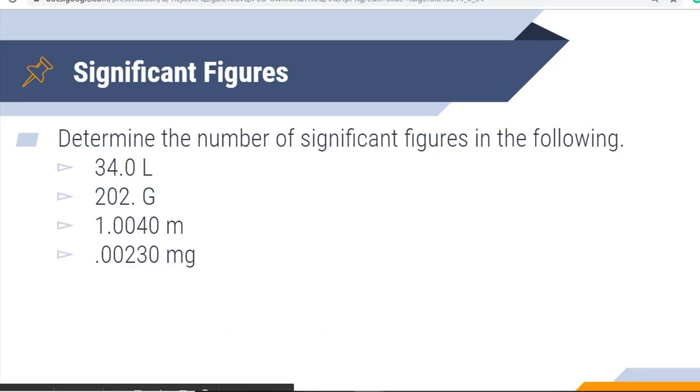Let's get some practice and determine the number of significant figures in the following. The first one is 34.0 liters. We know that the three and the four are significant. That zero is significant as well because there's a decimal point, so this has three significant figures. 202 grams has two non-zero digits and a zero between them, so we have three. 1.0040 has trailing zeros and zeros between non-zero digits, but all of these are significant, so that's five. And then 0.00230 - leading zeros are never significant, so only the last three are significant. So this has three significant figures. Pretty straightforward. Let's move on.